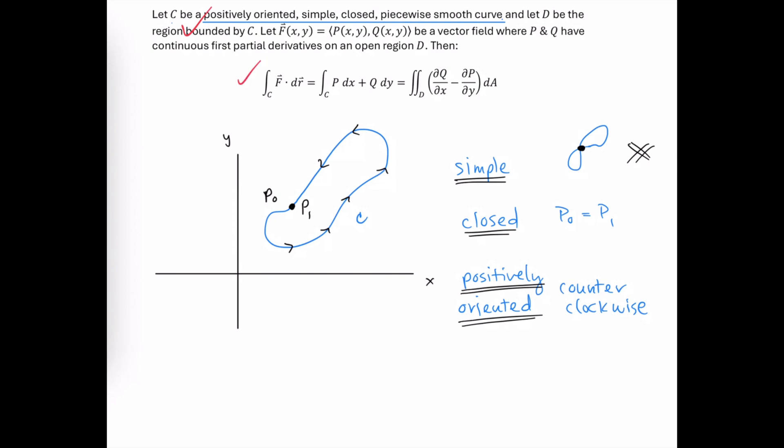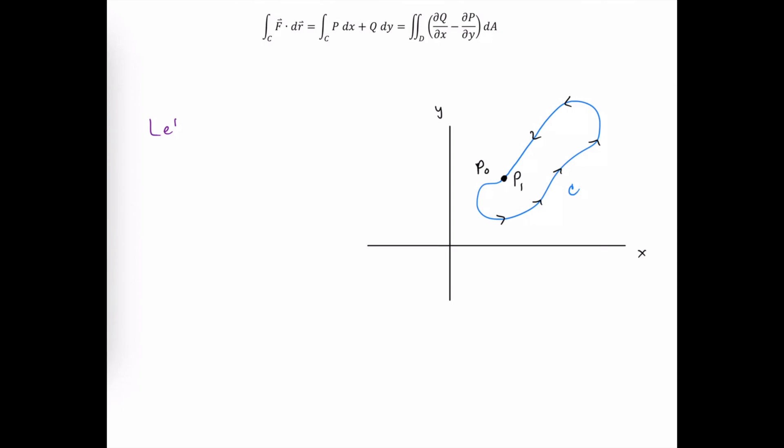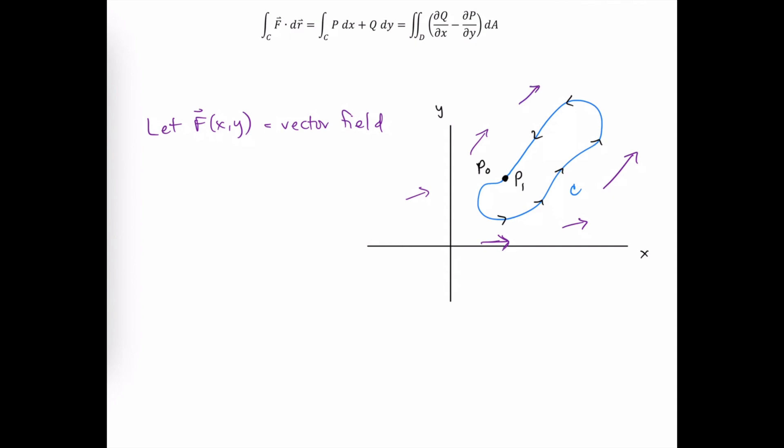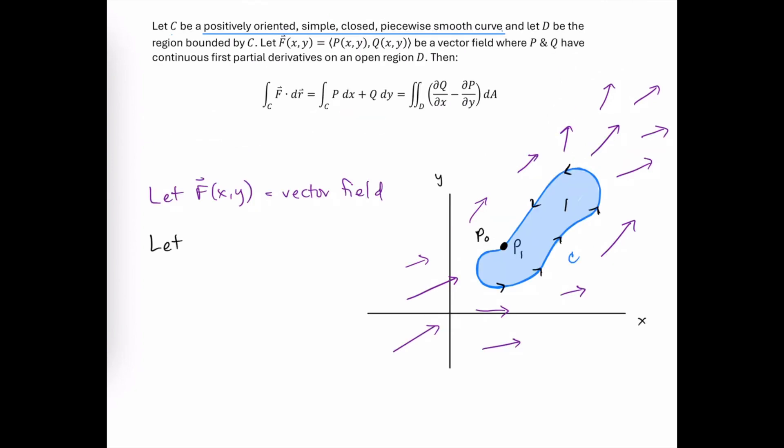So when all those things are true about our path C, then we're allowed to use Green's Theorem in order to calculate the line integral over that path. Now let's let f(x,y) be some vector field that's passing through this region. These vectors can be facing in all different directions with varying magnitudes. And let's also let D be this region inside C, or we'll call it the interior of C.